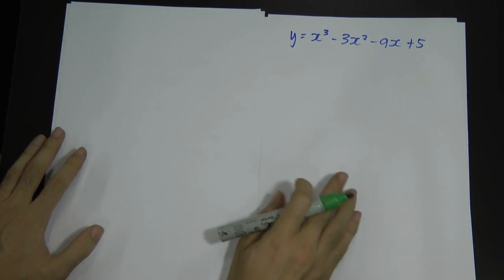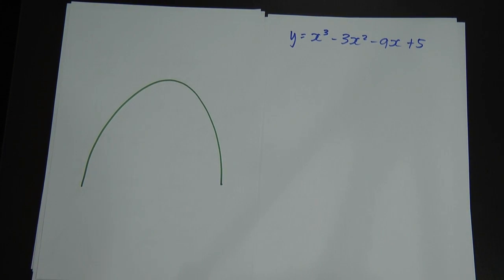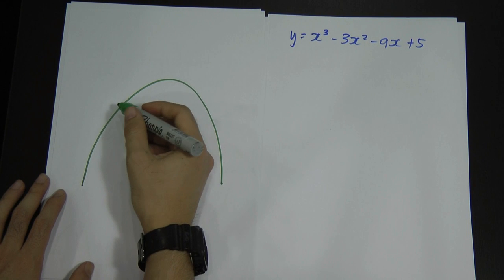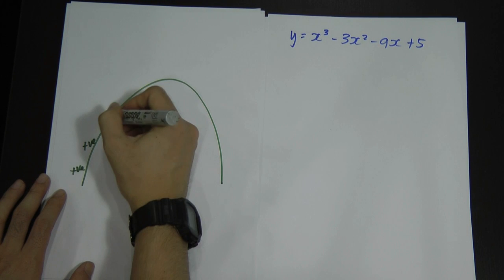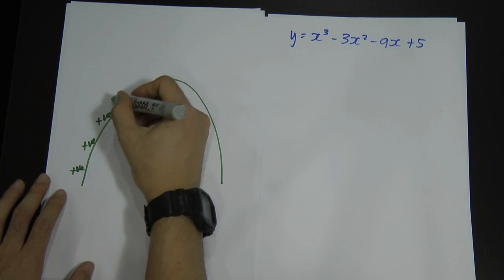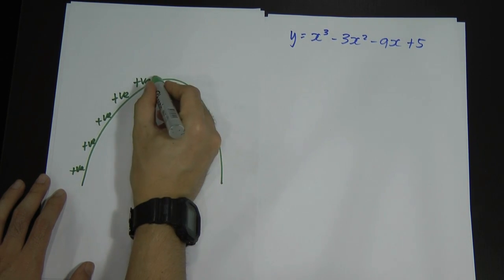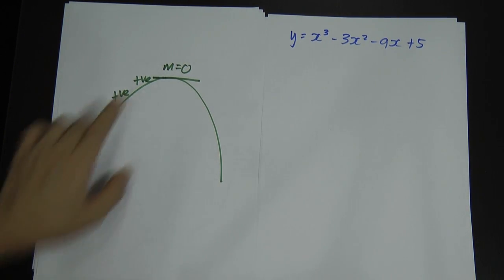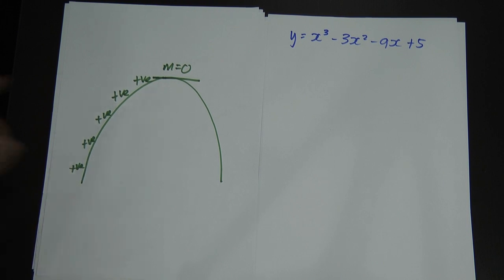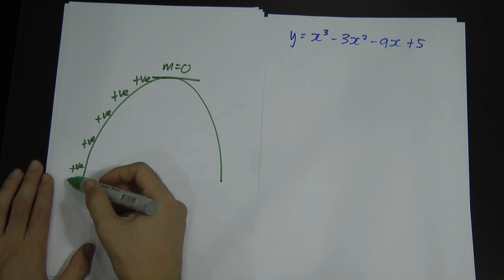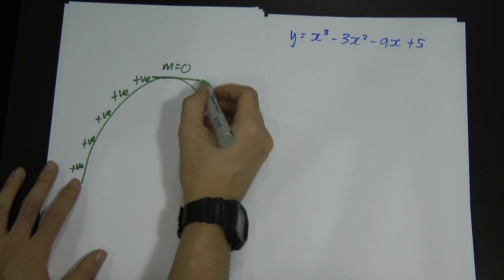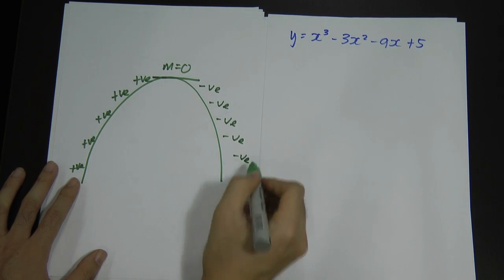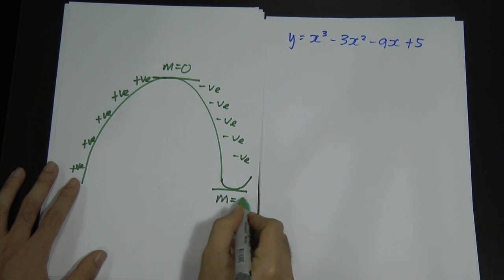Let's say I have a curve. When I differentiate the curve and look at dy/dx, you'll find that on the rising part, the gradient is increasing — positive, positive, positive — until the turning point. At the turning point, which we also call the maximum point or minimum point, dy/dx equals zero. After that, the gradient keeps decreasing — negative, negative — until the next turning point where the gradient becomes zero again.